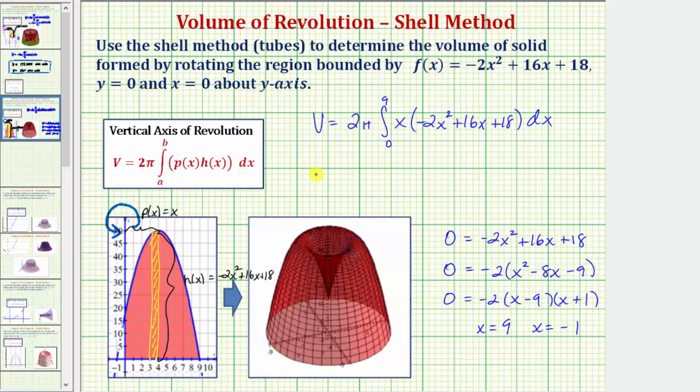Let's go ahead and distribute the x. So the volume v is equal to 2 pi times the integral from 0 to 9 of negative 2x cubed plus 16x squared plus 18x. Let's evaluate this on the next slide.